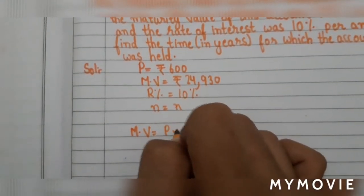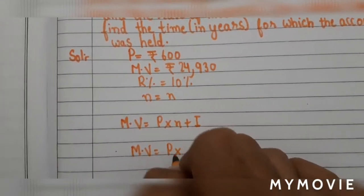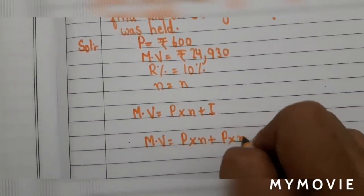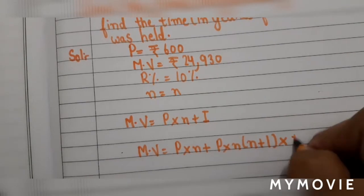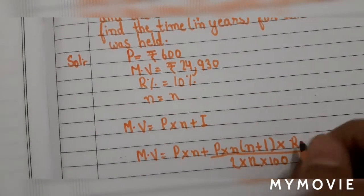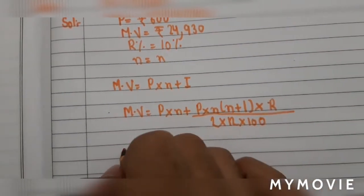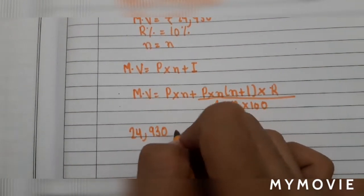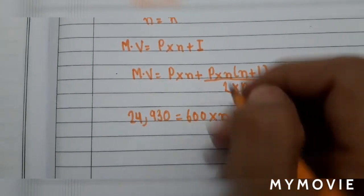Apply the formula: MV = P × n + P × n(n+1) / (2 × 12 × 100) × r. Now put the values: MV is 24930, P is 600 into n, plus 600 into n(n+1) into 10 divided by 2 into 12 into 100.